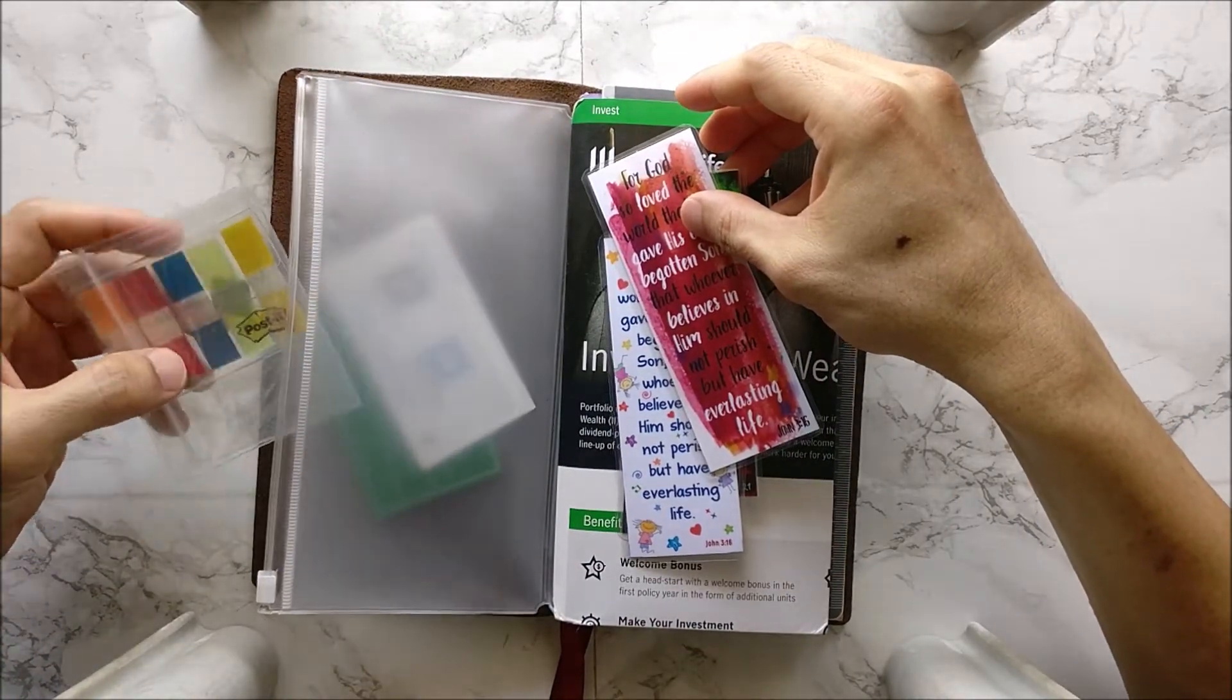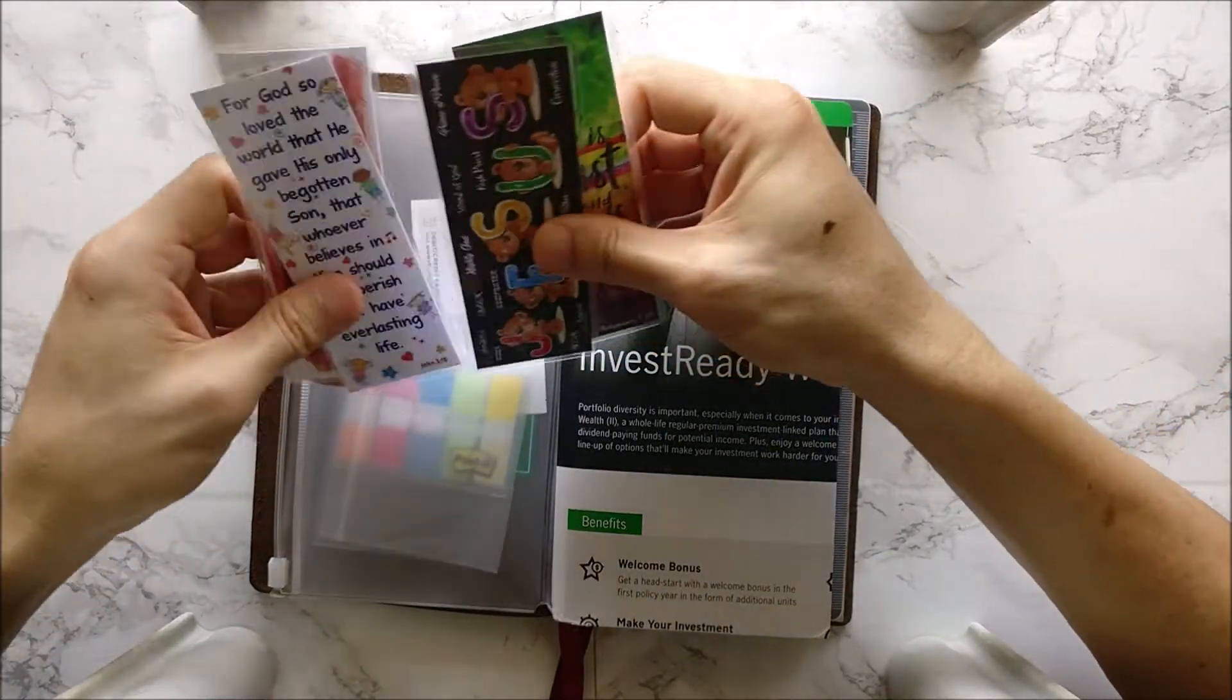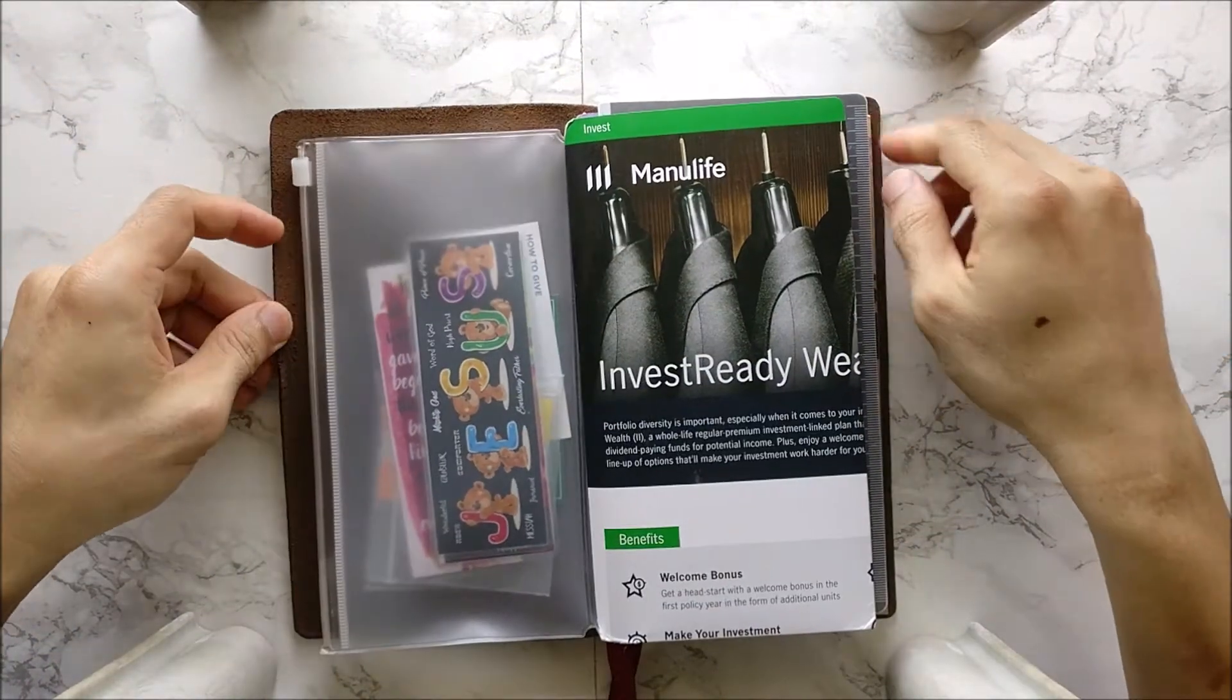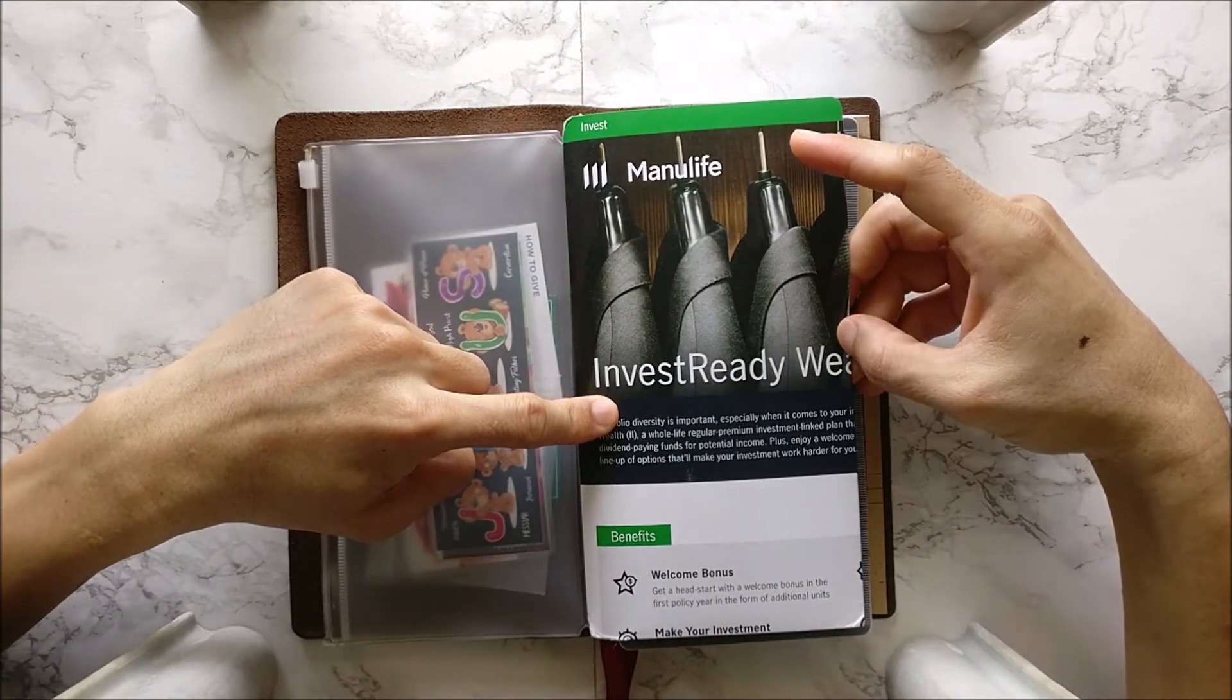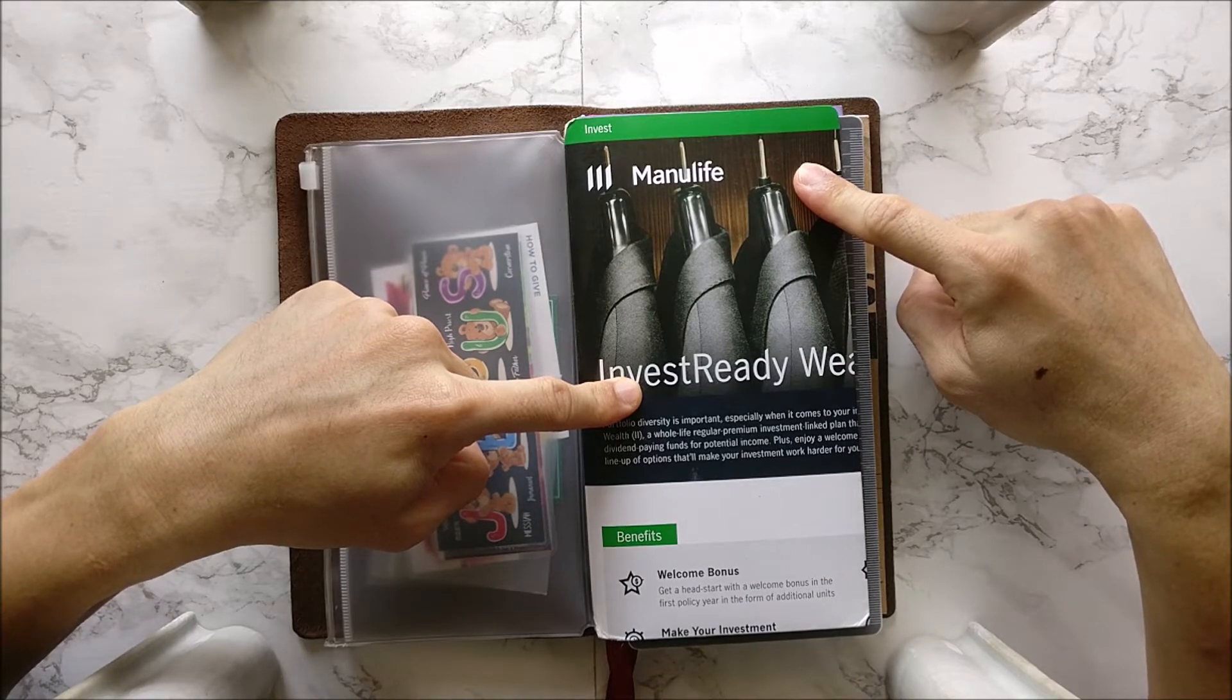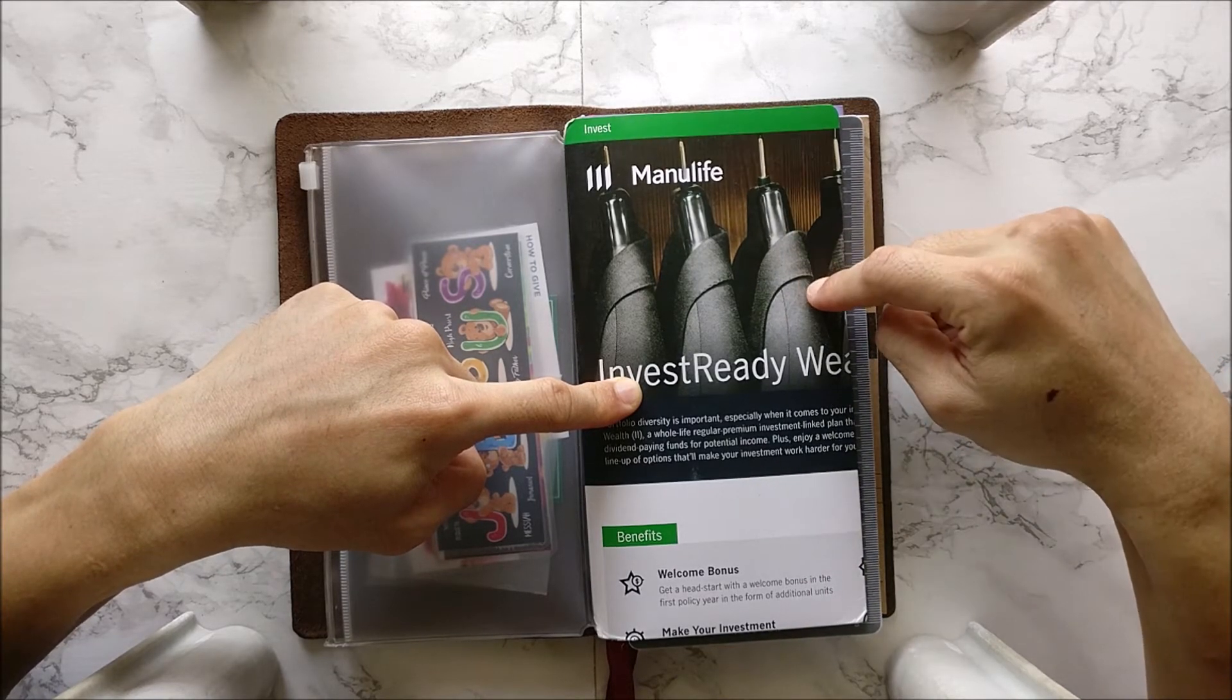And we have here, this is a post-it. Post-it marker tabs. Alright, just a few. Gonna put in this zipper pocket. Alright, so difficult to film with this chair. And this is another craft, what do you call this? Craft folder. I did this, I created this out of one of the insurance advertisements.